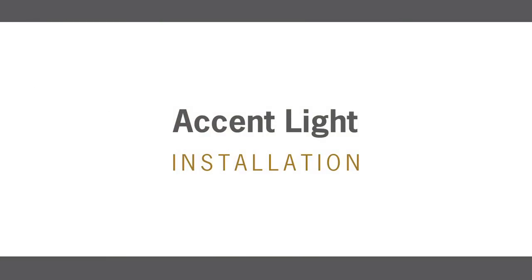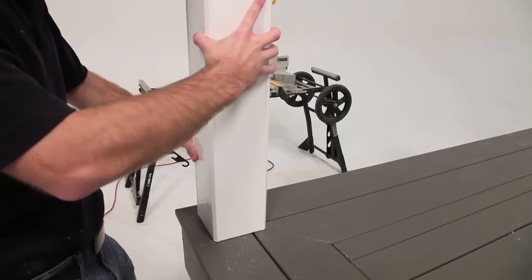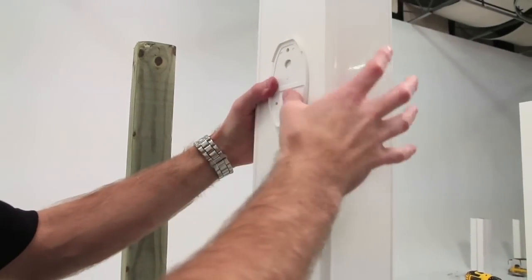Let's start with the accent light, which is offered in architectural bronze and white. If using a post skirt, install this over the 4x4 post before installing the post sleeve.